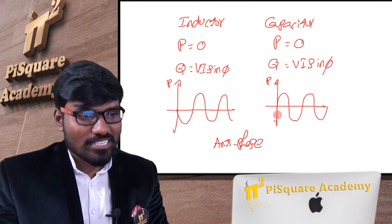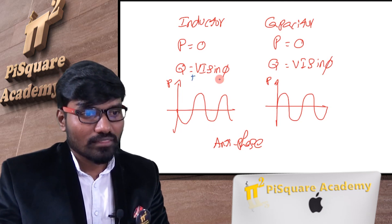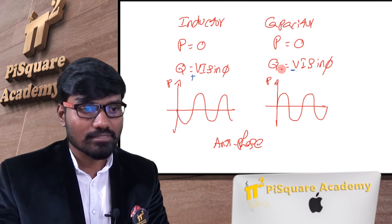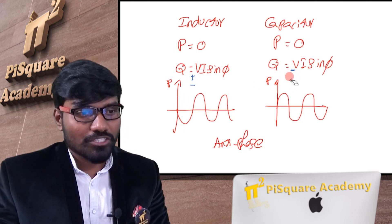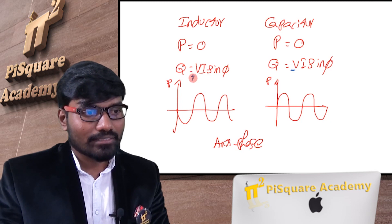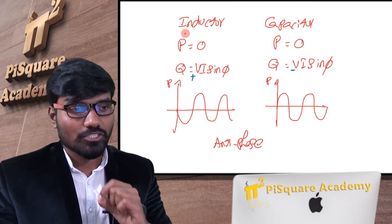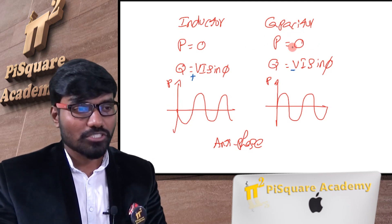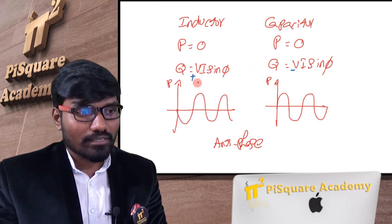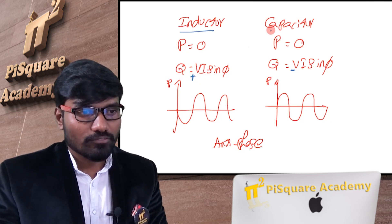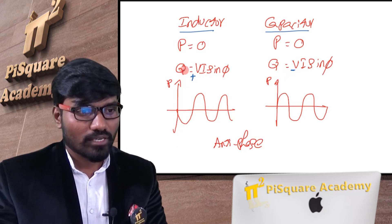The waveforms say both are antiphase. So I will treat one as positive and the other as negative. As a standard convention, we take the inductor case Q as positive, because most loads are inductive in nature — very few loads are capacitive. So as a convention, we take Q as positive for an inductor and Q as negative for a capacitor. This is a key point of this entire session.